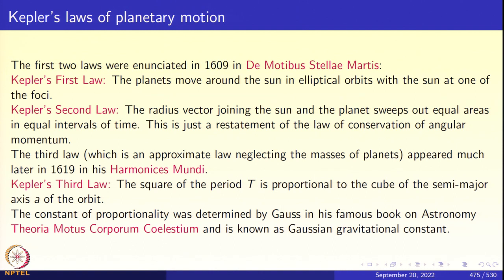The third law, which is an approximate law neglecting the masses of the planets, appeared much later in 1619 in Harmonicis Mundi. Kepler's third law says that the square of the period T is proportional to the cube of the semi-major axis of the orbit. The constant of proportionality was determined by Gauss in his influential book on astronomy, Theoria Motus Corporum Coelestium, and is today known as the gravitational constant.